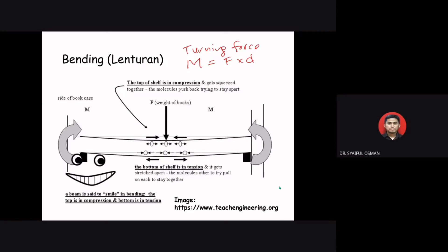The molecules at the top of the curved beam get squeezed together — they experience compression — while the molecules at the bottom get stretched out and experience tension. A beam or pole in bending will fail in tension and break on the side being pulled apart. For example, in a bookcase shelf, the top surface experiences compression and the bottom surface experiences tension.